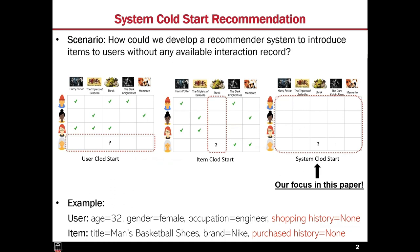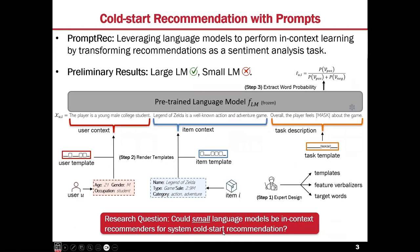To make personalized recommendation happen in our setting, we could leverage user or item profile features such as the age, gender, and occupation of a user, and the item's title, brand, category, and price level. We came up with a simple but effective method called PromptRec.